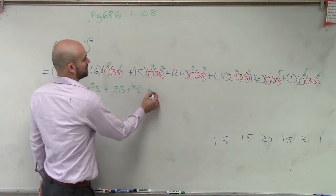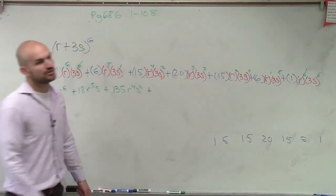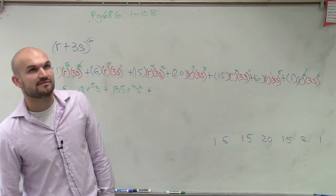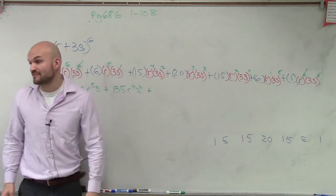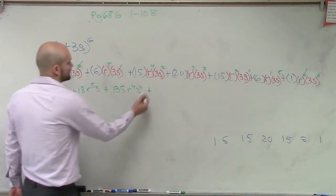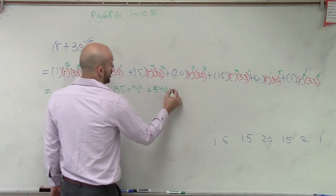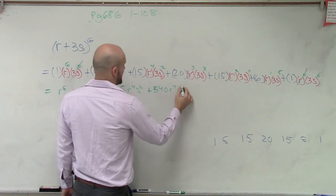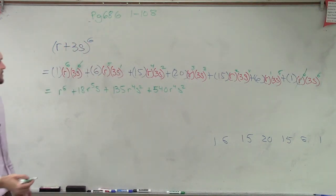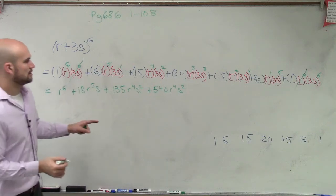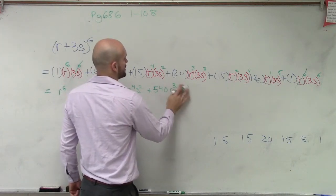Next we have r cubed, so 3 cubed is 27. Then 27 times 20: 27 times 10 is 270, so it would be 540. So we have 540r^3s^3.